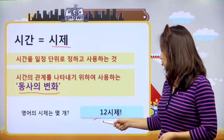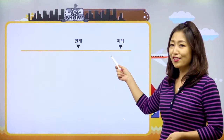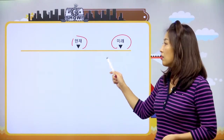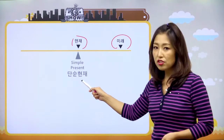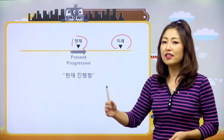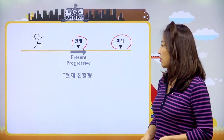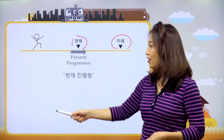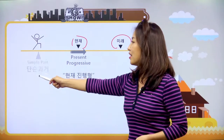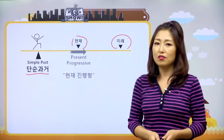영어의 시제는 12시제라고 했었어요. 우리 시간바 기억나요? 우리는 여기 현재에 있고 여기 미래가 있어요. 지난 시간에 우리가 단순 현재 시제를 배웠고, 지지난 시간에 배웠고, 지난 시간에는 현재 진행형을 배웠었어요. 그러면 이제 현재보다 더 지난 시간이니까, 과거 시제, 단순 과거, 베스트라고 하는 단순 과거 시제에 대해서 오늘 이야기를 해볼 거예요.